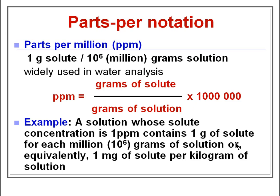This is equivalent to 1 milligram of solute per kilogram of solution. So if 1 milligram of solute is dissolved in 1 kilogram of solution, the concentration of that solution is 1 ppm.